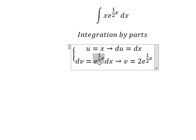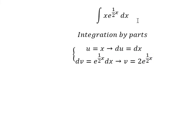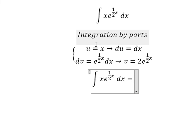The integration of e to the power of one over two x gives us e to the power of one over two x, divided by one over two — that is why we have the factor of 2 here. So we have u multiplied by v.